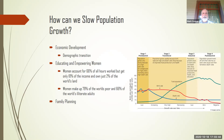How can we slow population growth? Economic development is one of the easiest ways — people who are working, especially women, tend to have fewer children. The best way to slow population growth is probably educating and empowering women. Women account for 60 to 66 percent of all hours worked but get only 10 percent of the income and just two percent of the world's land. They also make up 79 percent of the world's poor. We know for a fact that empowering and educating women is the key to economic success and to slowing population growth in a positive way.